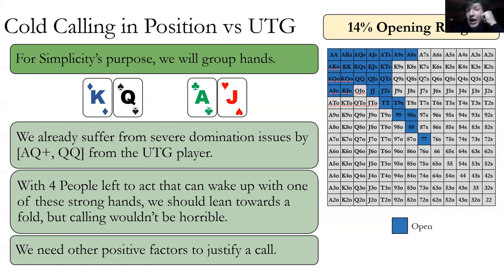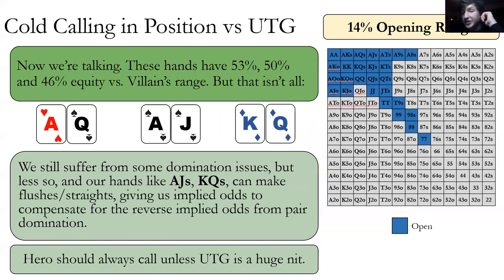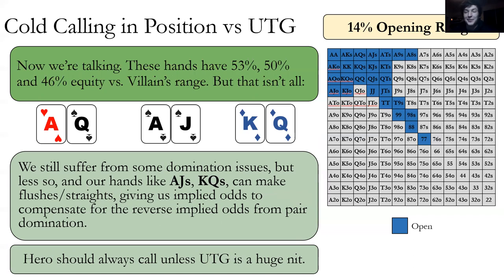These hands are good. By equity averaging, we have 53%, 50%, 46% respectively — so we're winning half the time or more against their whole range. But we still have some domination issues: ace-jack still gets dominated by ace-king and ace-queen. King-queen suited will get dominated by ace-king and ace-queen, so we have reverse implied odds there. But we also have implied odds from being able to make flushes and straights, so it kind of equals out. We should always call or raise.